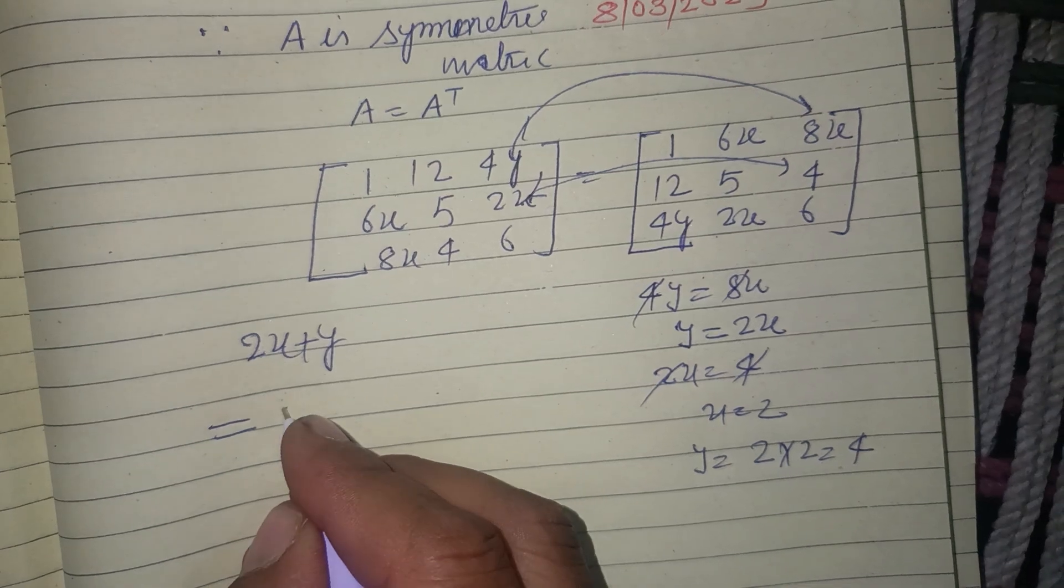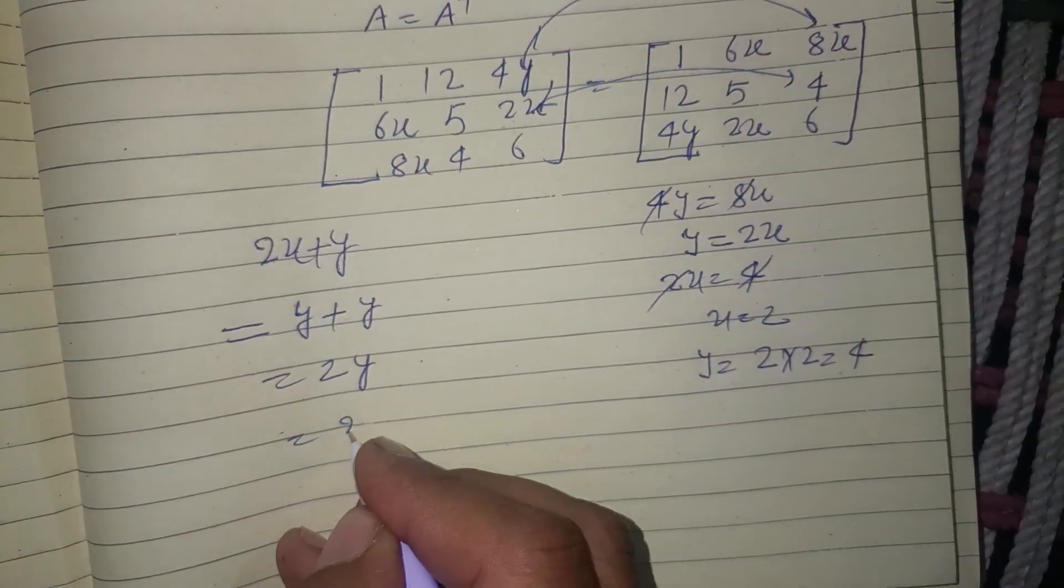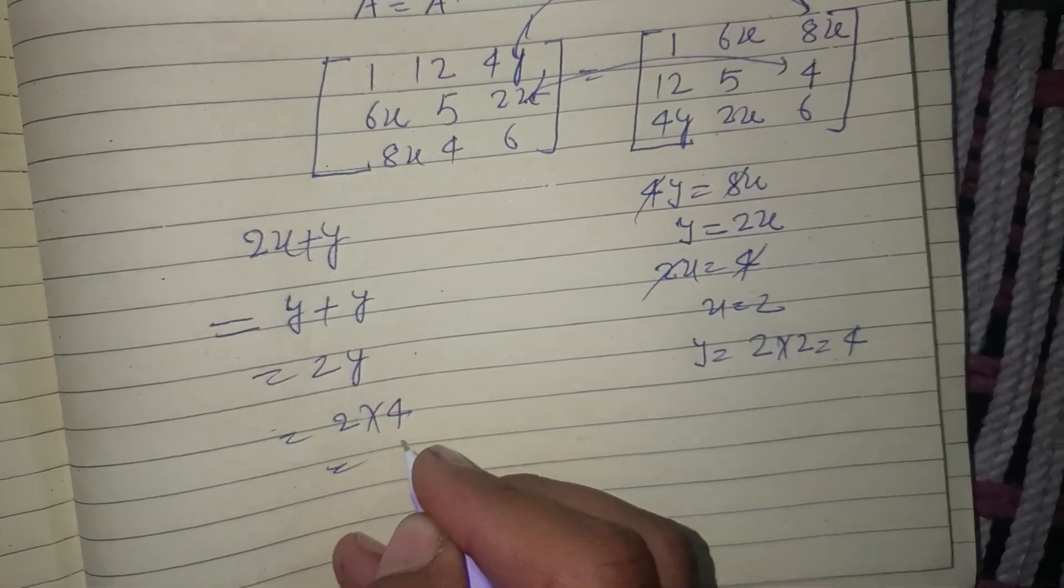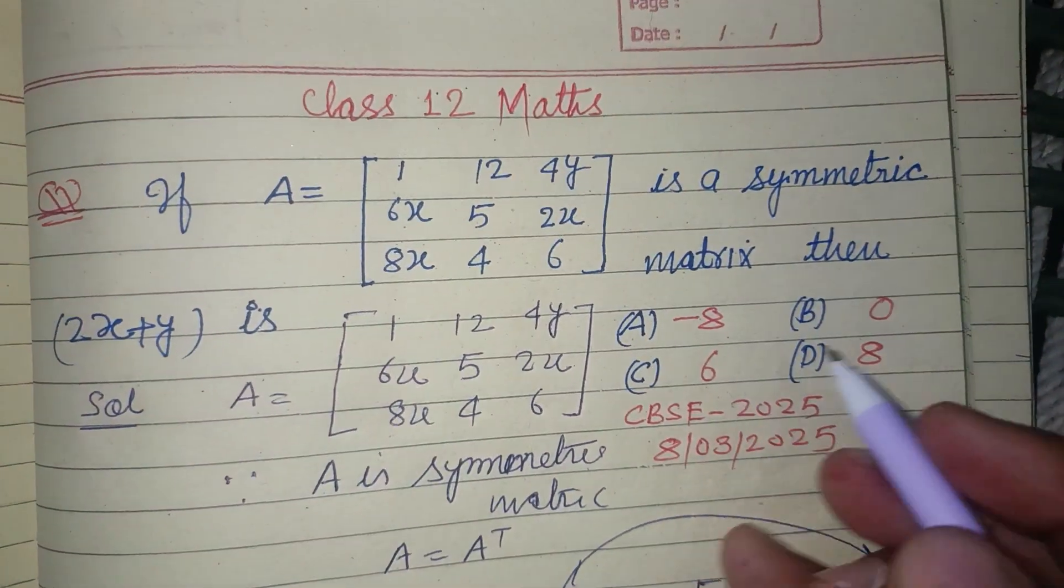So this is 2x plus y, which is 2y, and 2y is 4, so 2 times 4 is 8. 8 is the correct answer of this question, which is found in